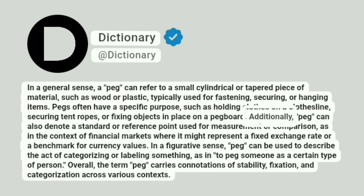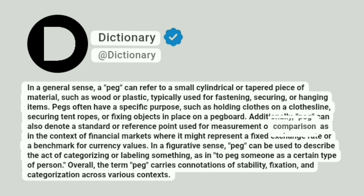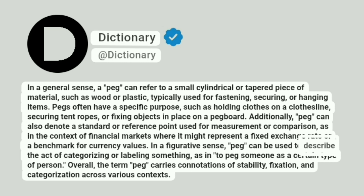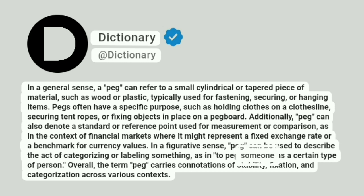Additionally, peg can also denote a standard or reference point used for measurement or comparison, as in the context of financial markets where it might represent a fixed exchange rate or a benchmark for currency values. In a figurative sense, peg can be used to describe the act of categorizing or labeling something, as in to peg someone as a certain type of person.